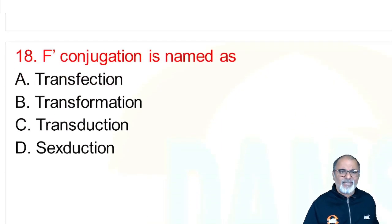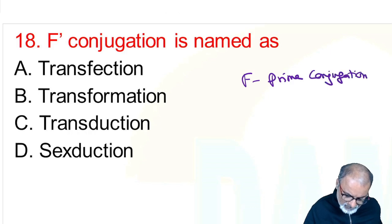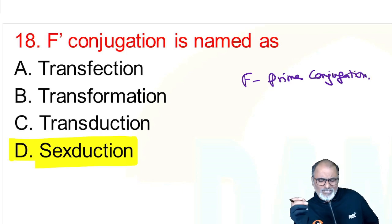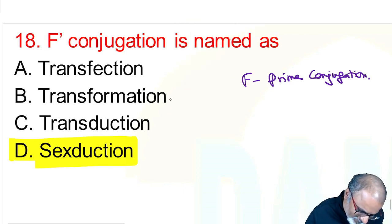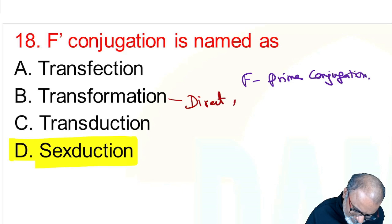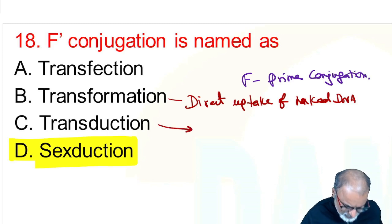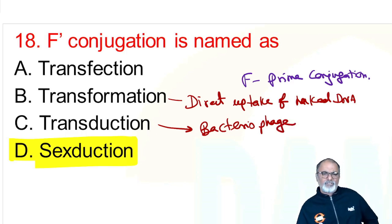F-prime conjugation is otherwise called sexduction. Transfection means introducing purified DNA into eukaryotic cells. Transformation is direct uptake of naked DNA. Transduction involves bacteriophage — transduction is bacteriophage-mediated gene transfer.